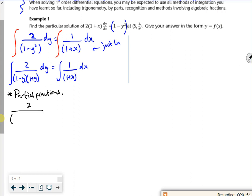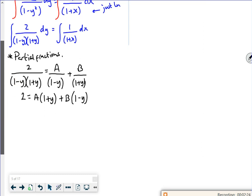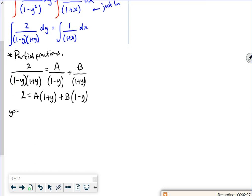So 2 over 1 minus y, 1 plus y. It's two brackets multiplied together, so each one gets its own fraction. Multiply through by the common denominator. Think about what numbers to use to get rid of it. So if I use y is minus 1, gets rid of the first bracket, and that would be 2 equals 2B, so 1 for B.